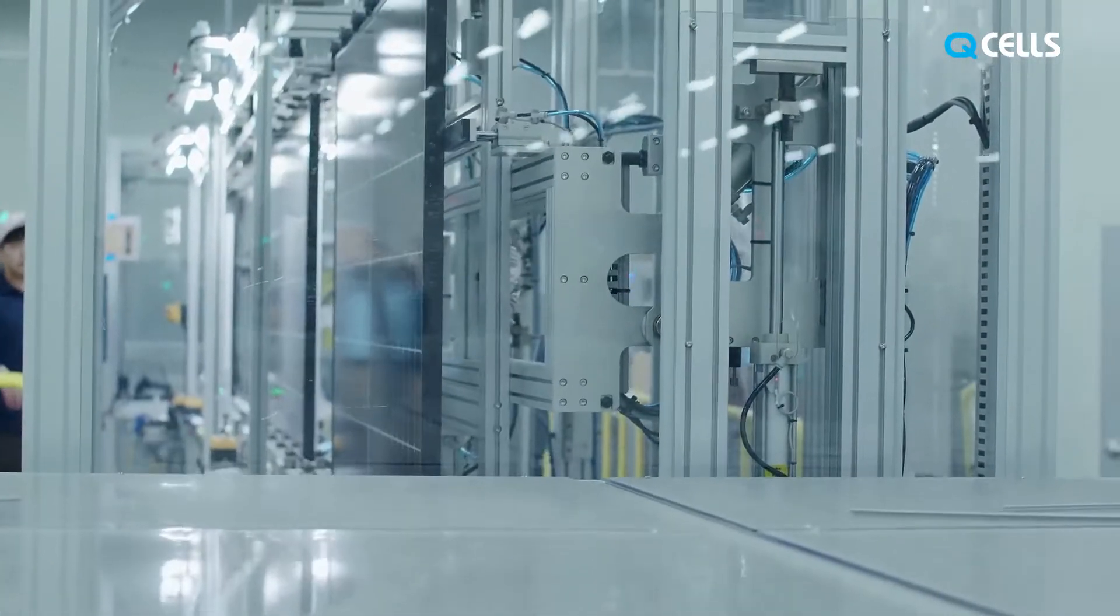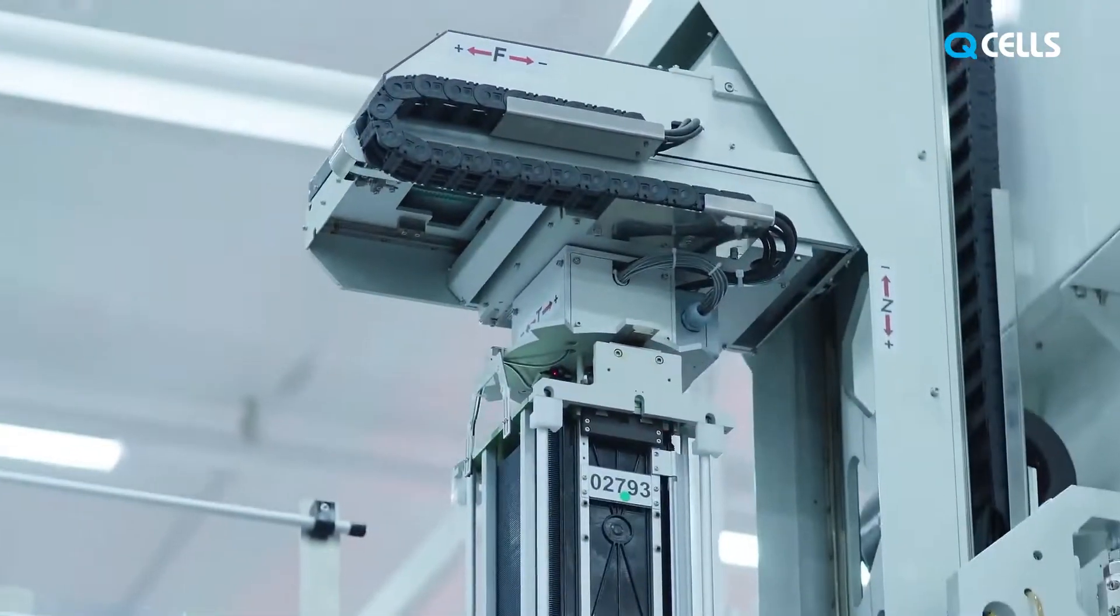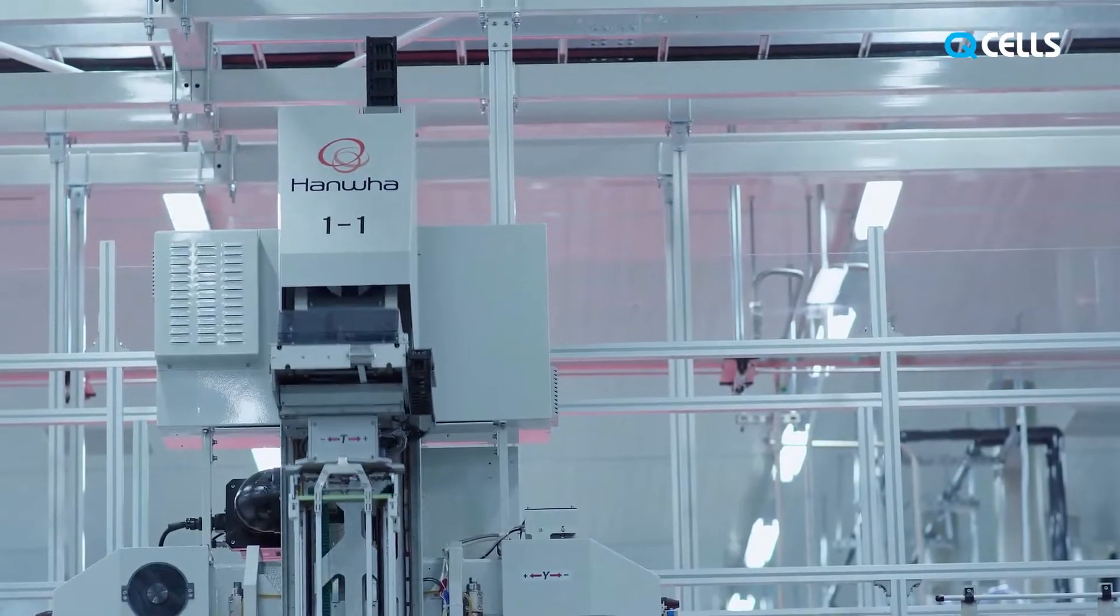95% of all automated robots used in the Jinchun factory have been constructed by one of Hanwha Group's affiliates, Hanwha Machinery.